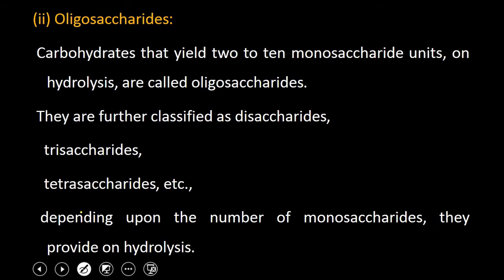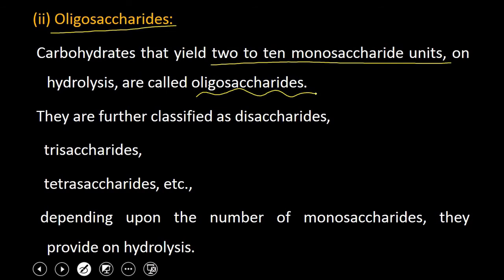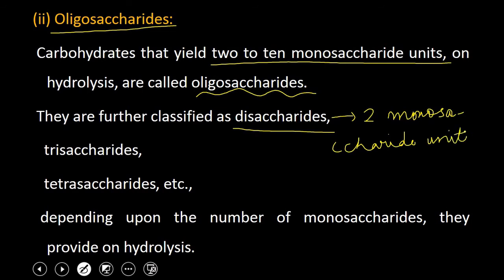The second type of carbohydrates are oligosaccharides. Carbohydrates which yield 2 to 10 monosaccharide units on hydrolysis are called oligosaccharides. They may give 2, 3, 4, or up to 10 units of monosaccharides. Depending on the number of monosaccharide units given on hydrolysis, they are further classified — disaccharides give 2 monosaccharide units.